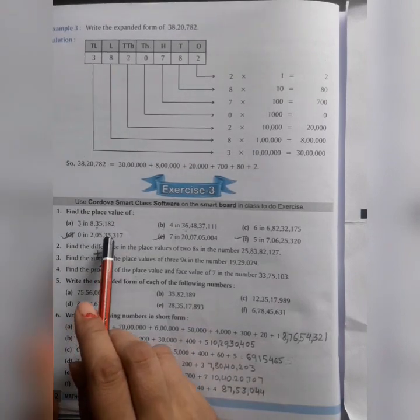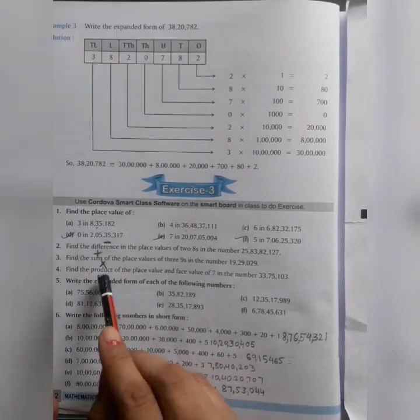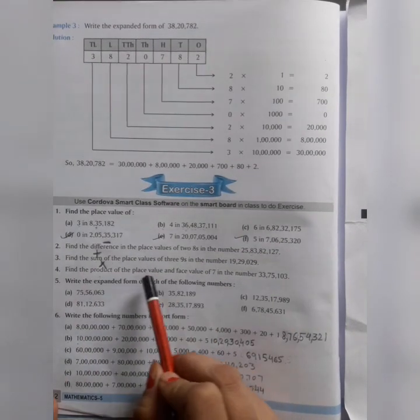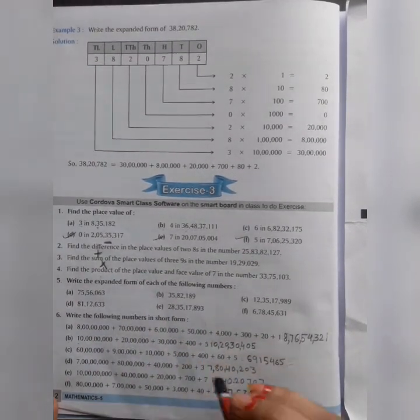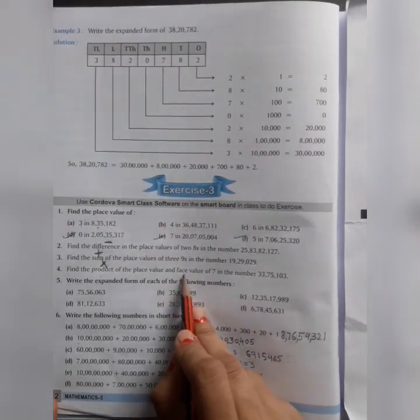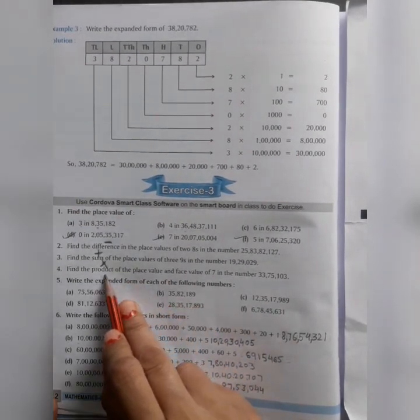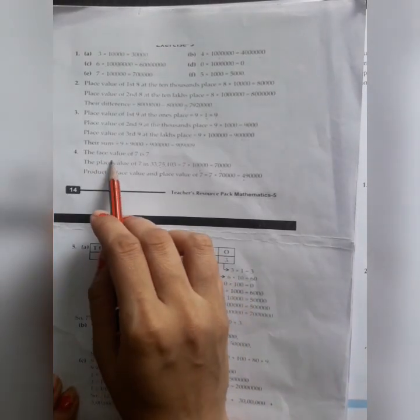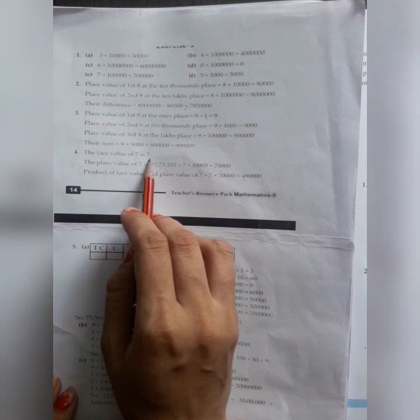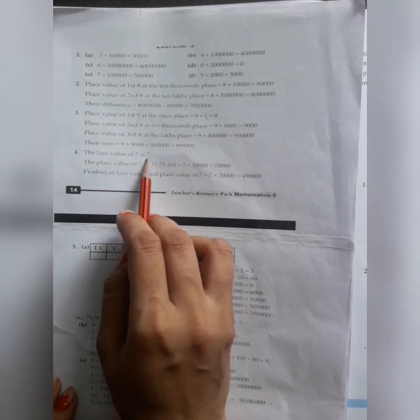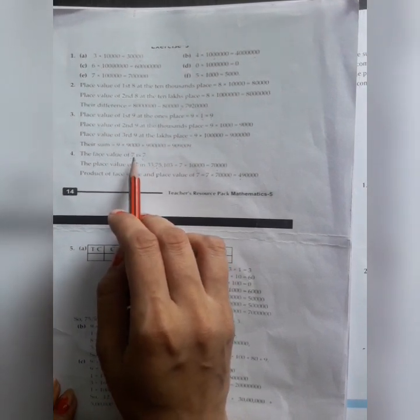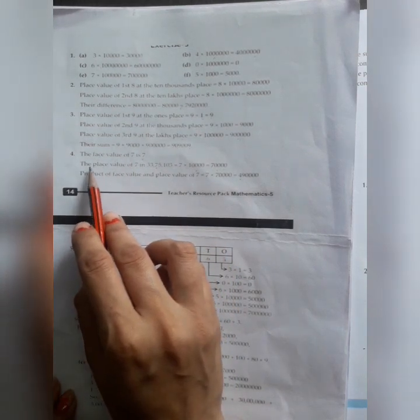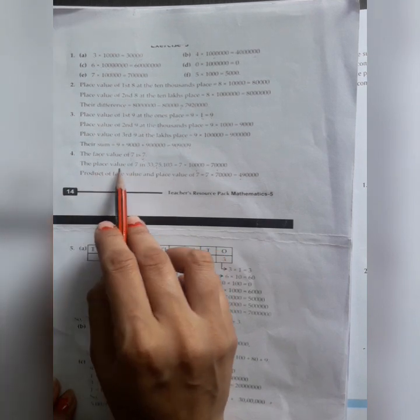We have only found place value before, but you have to find face value and place value, then the product. Product means multiply. Difference means minus, sum means plus, then product means multiply. The face value and place value find out. We have to multiply 7, the face value and place value. Let's see. The face value of 7 - face value is the same, as I told you. It doesn't change. The face value of 7.